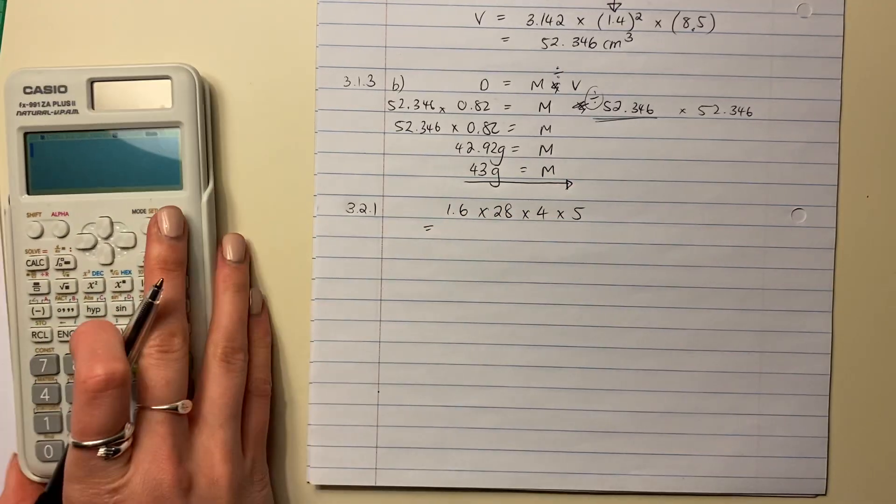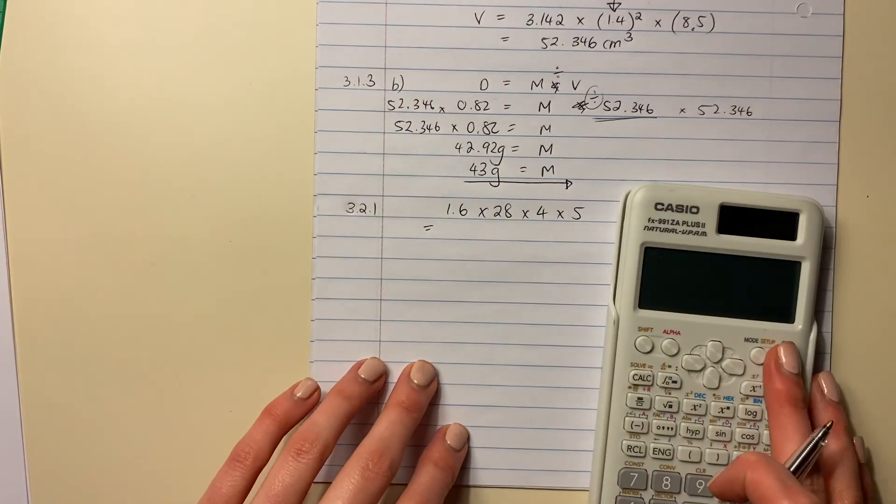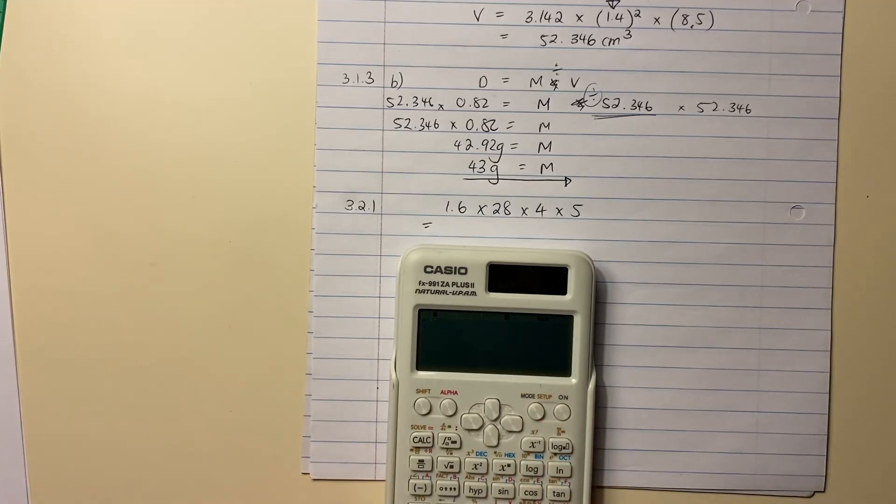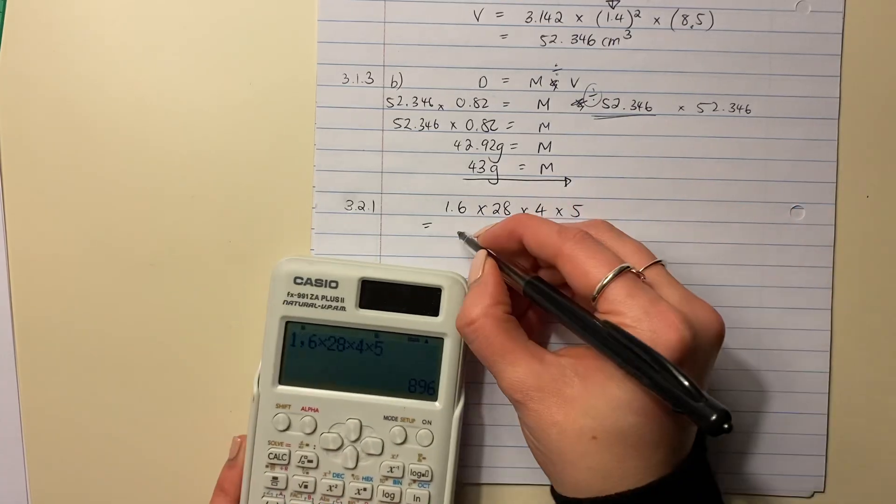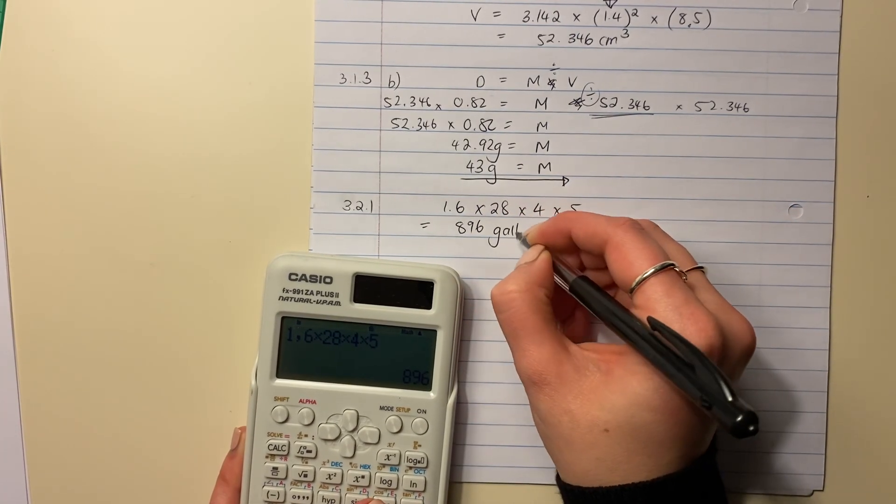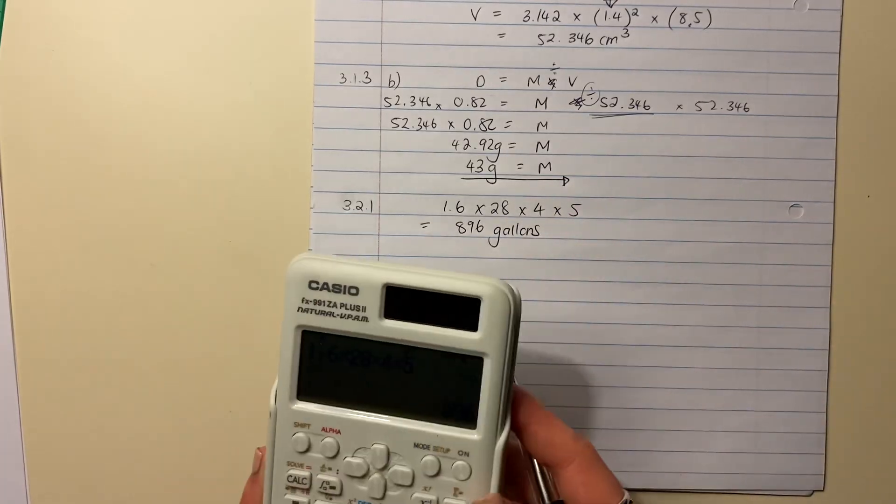Excuse the background noise, just my inverter. So let's put that into our calculator. 1.6 times 28 times 4 times 5, right? And that is how many gallons it is.